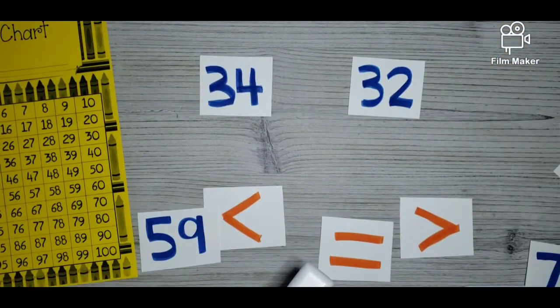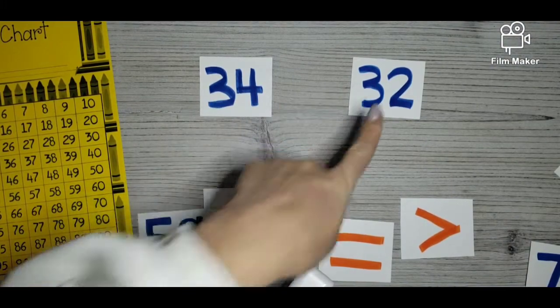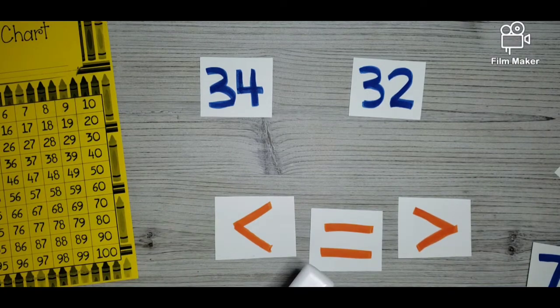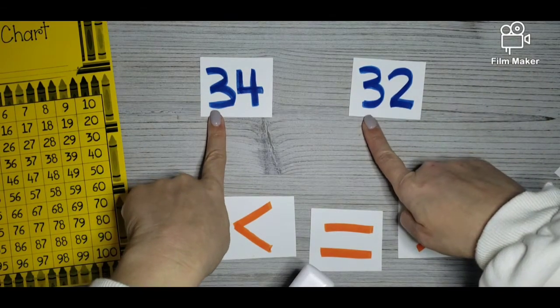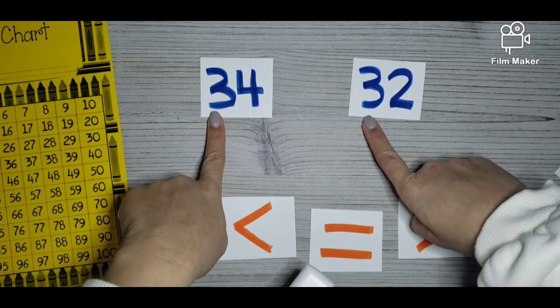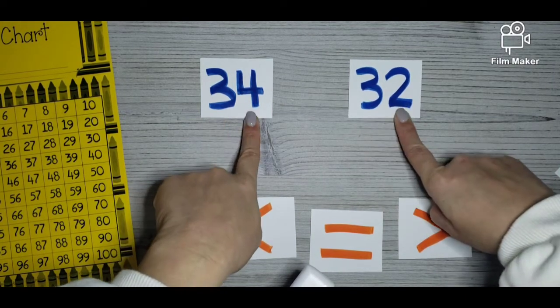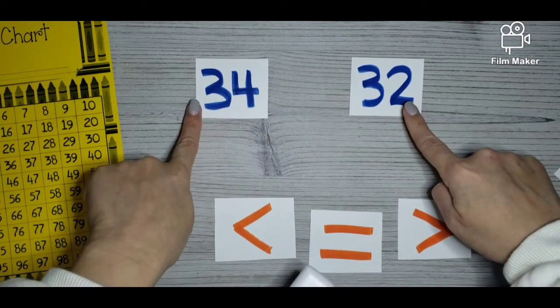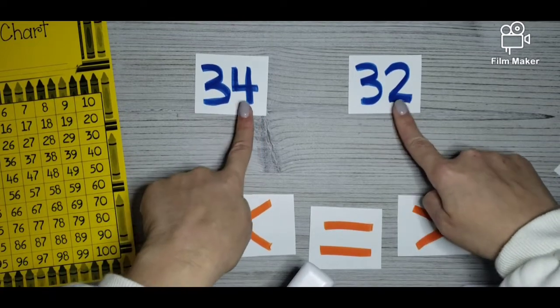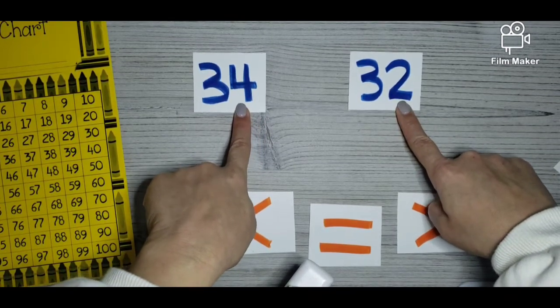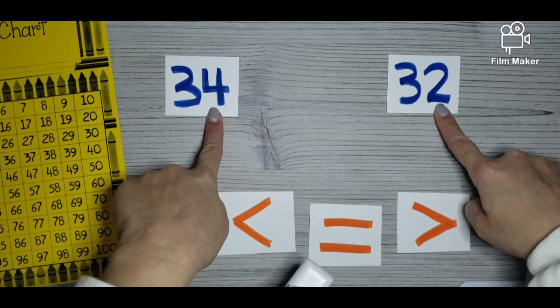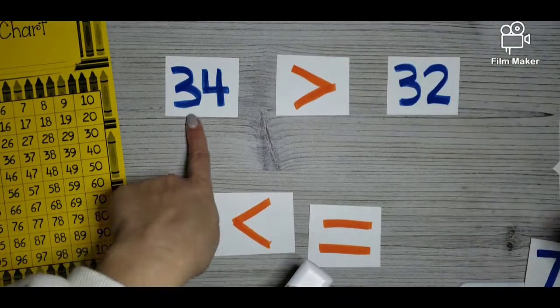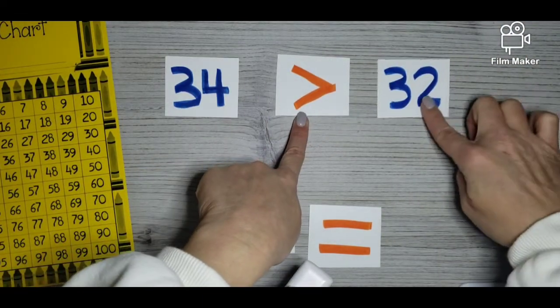Remember these from last week when we were ordering numbers with the same number in the tens place? So can we use these symbols today to compare these two numbers? Good. So can we look at the tens place today with this number? Nope. We would have to look at the ones place. So we have 34 and 32. Which number is bigger in the ones place? Since the tens place is the same. We have a four and a two. Which one do you think the alligator would want to eat? Good. The 34 is larger or 34 is greater than 32.